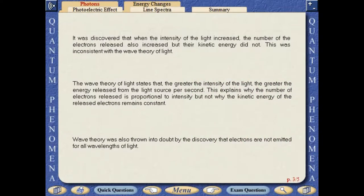It was discovered that when the intensity of the light increased, the number of electrons released also increased, but their kinetic energy did not. This was inconsistent with the wave theory of light.